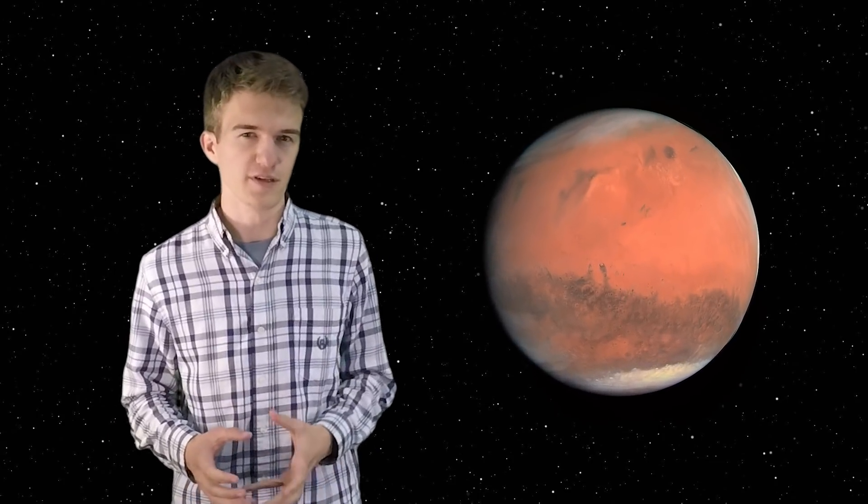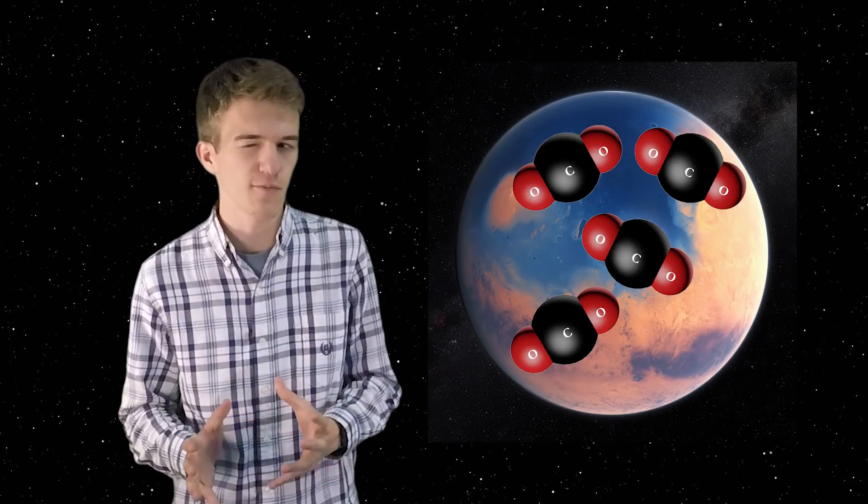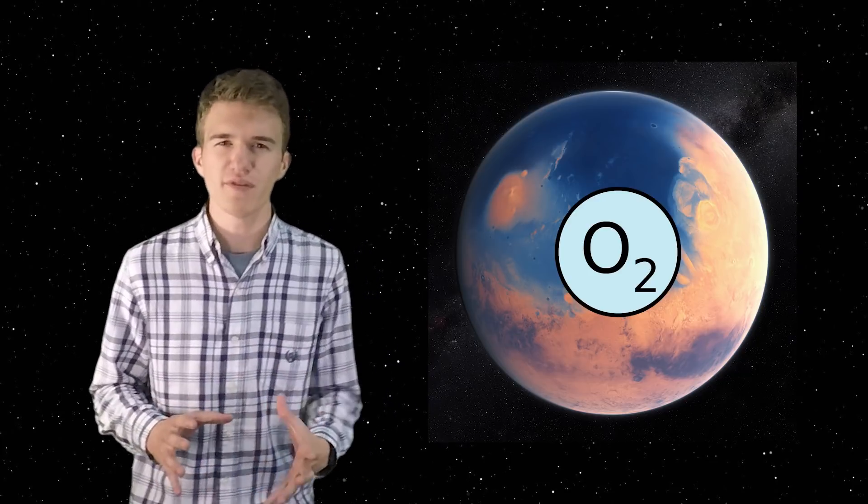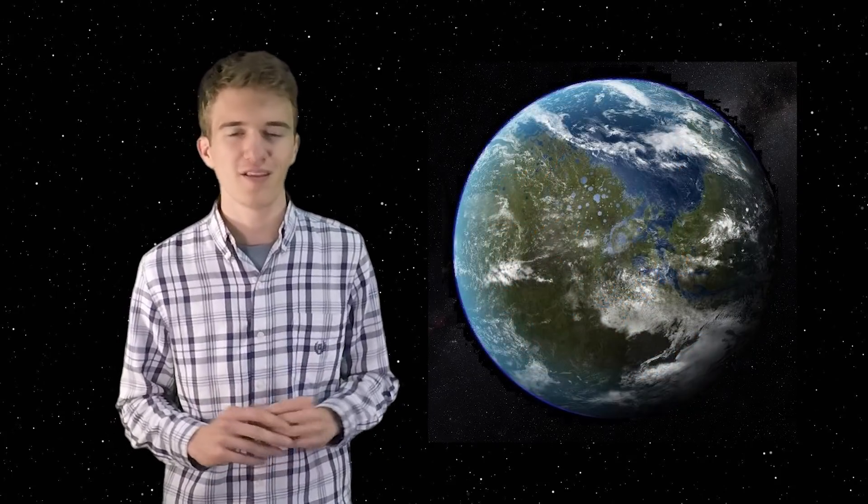So the Martian atmosphere is mostly carbon dioxide, and if we terraform Mars to be even warmer, we're just going to be adding more CO2, which means at some point we're going to have to convert that atmosphere to oxygen. What are some of the challenges we're going to face in having to do that, and are plants really the best option in doing so? Let's talk about that.